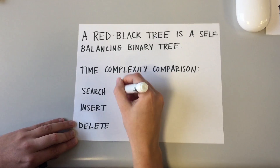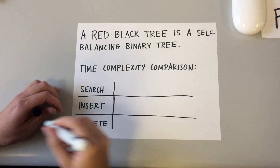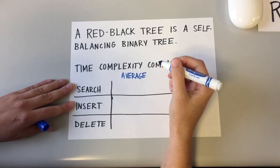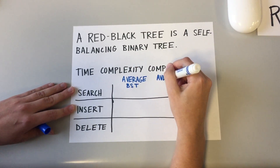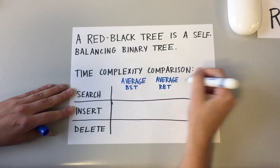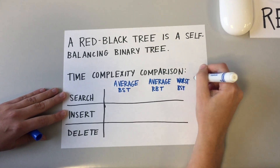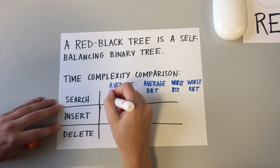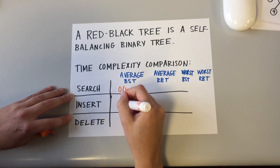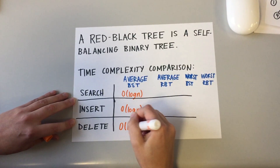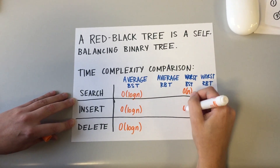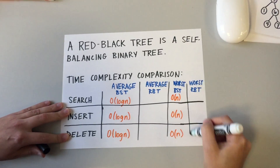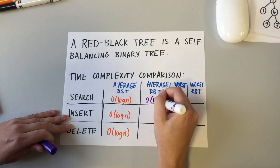Here is a time complexity comparison of binary search trees and red-black trees. We are comparing search, insert, and delete only, because these are the major operational differences between the trees. We are going to compare the average cases and the worst cases. The average case for binary search trees for search, insert, and delete are all O(log n), and O(n) in the worst case. The average and worst case for red-black trees are both O(log n).